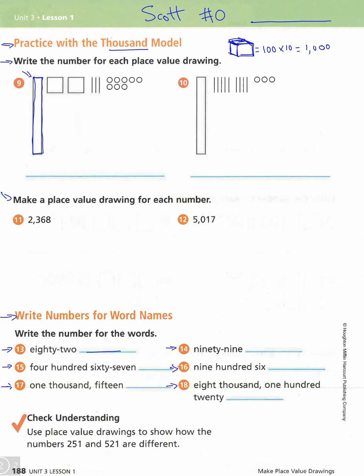If you're not done, pause the video. When you're ready, let's look at the 'check your understanding' section. The directions say to use place value drawings to show how 251 and 521 are different. Use the available space — show 251 in one area and 521 in another. Go ahead and pause the video. That's the end of Lesson 1 — good job!